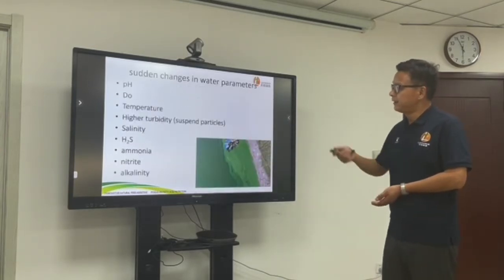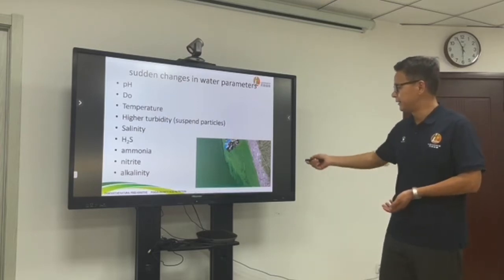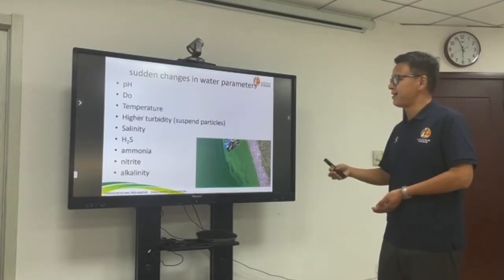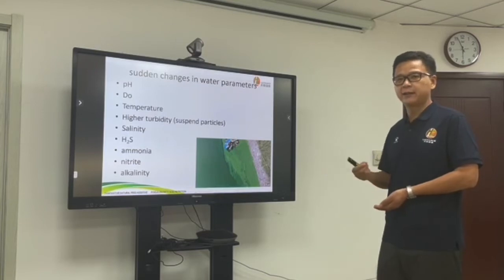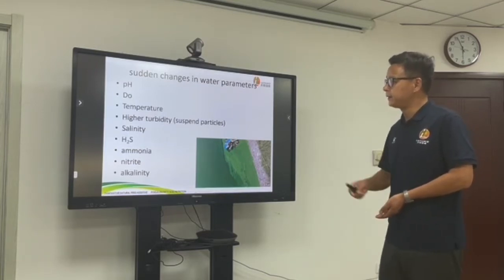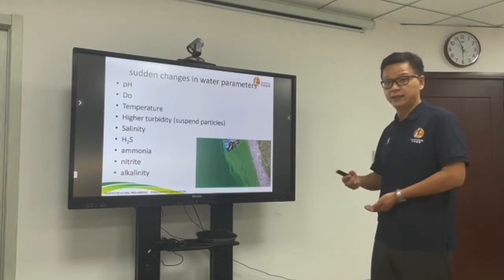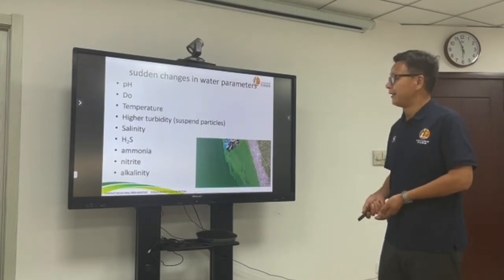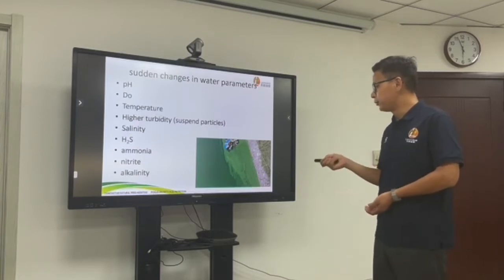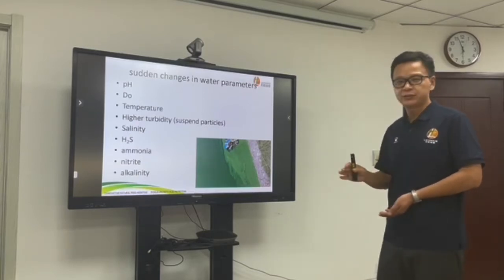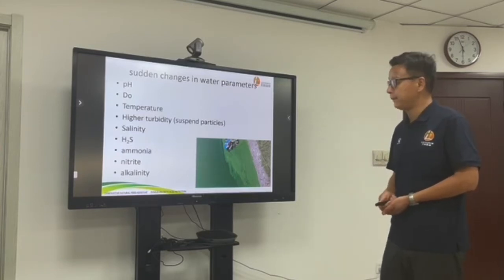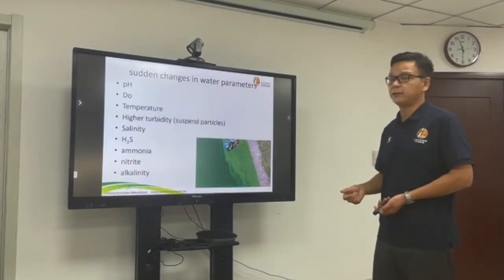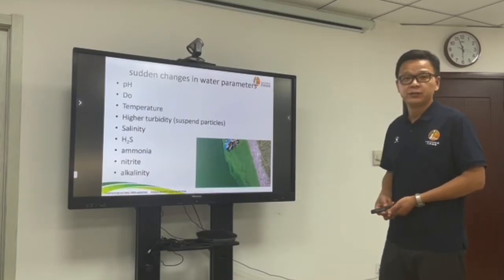Regarding parameters, especially pH — for high density ponds, the pH can vary a lot, from 8 up to 9.6 or 9.7. Once pH is above 9, it will definitely stress the shrimp, and pathogens will then infect your shrimp. For DO, especially in high density systems, make sure DO is above 5 mg/L. Once it drops below 3 or 2, it will definitely stress the shrimp and cause problems in the following days.